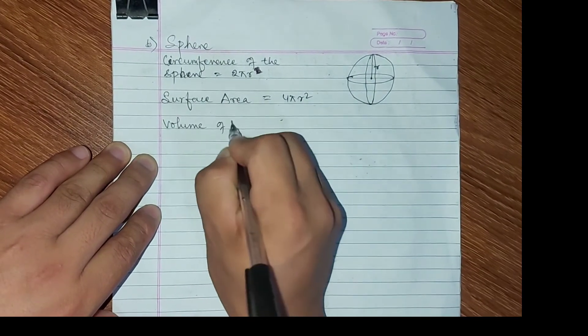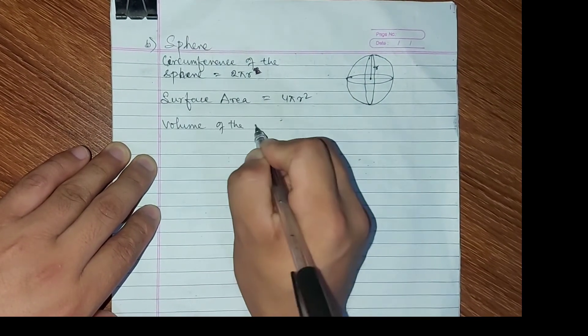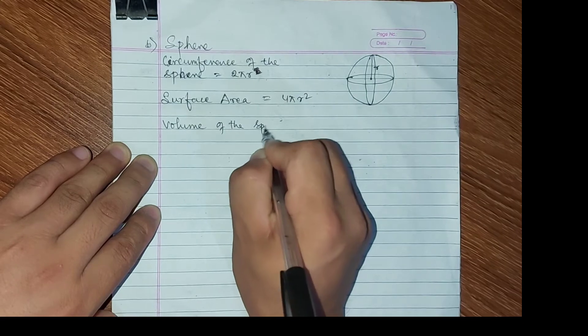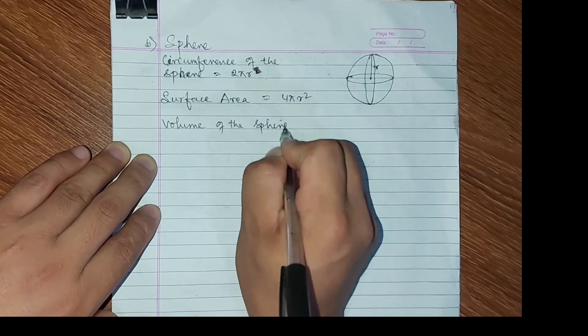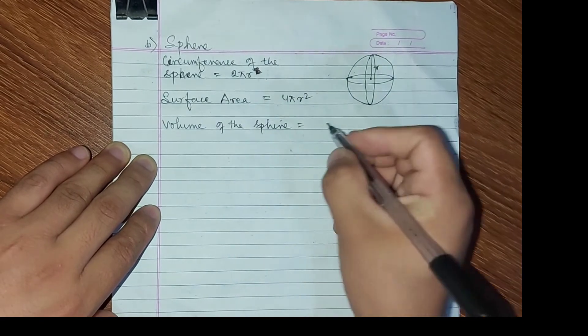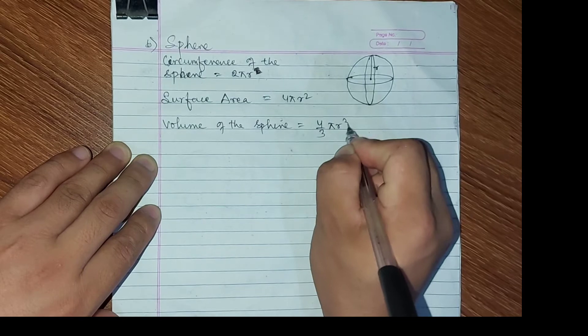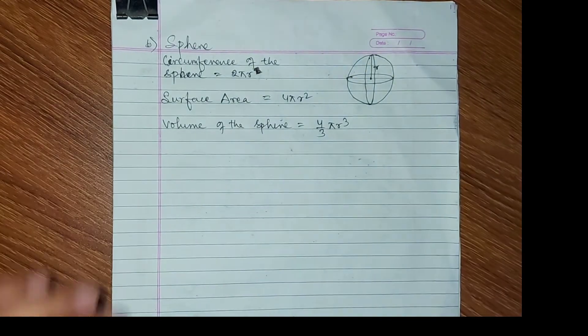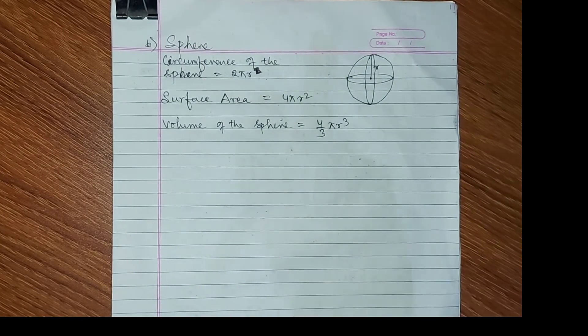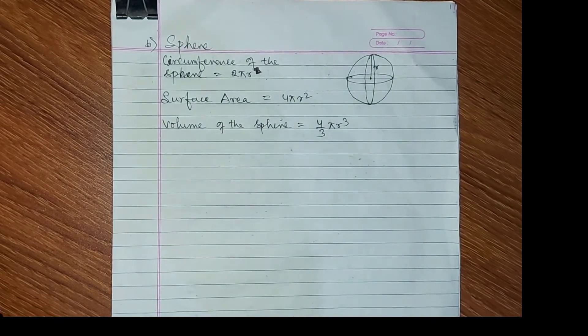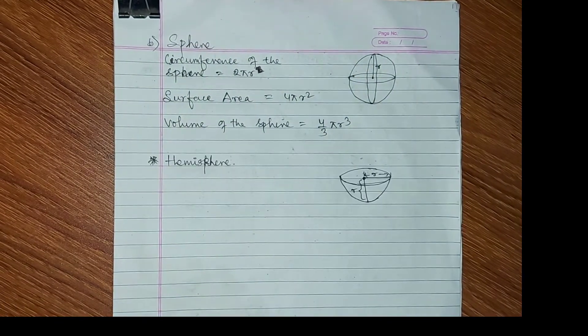4πr² is the surface area, or total surface area, of the sphere. Volume of the sphere: 4/3 πr³ is the volume of the sphere.